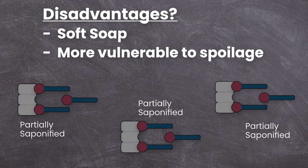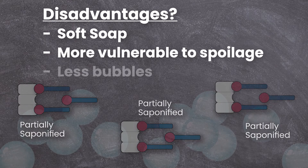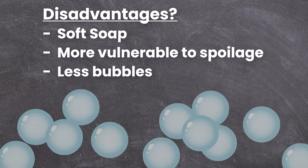Are there any disadvantages? Using a very high lye discount will make your soap very soft and will cause it to spoil. Also, the more not-completely-saponified oils you have, the less bubbly your soap will be. So with a too-high lye discount, you will end up with a very soft bar which doesn't produce much lather. But within a range of 5–10%, everything should be fine.